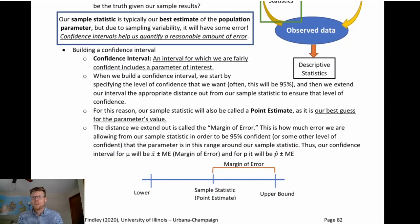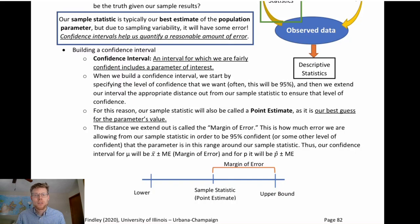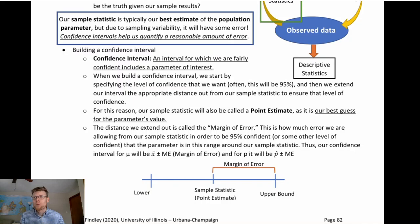A confidence interval is a straightforward estimation tool where we build an interval around our statistic — our point estimate, which will most likely be our sample statistic — for which we are fairly confident that the true parameter of interest is inside this interval. We're trying to estimate the position of a parameter. We take our point estimate and build this interval around it, and try to make a claim about how confident we are that this interval contains the true parameter.